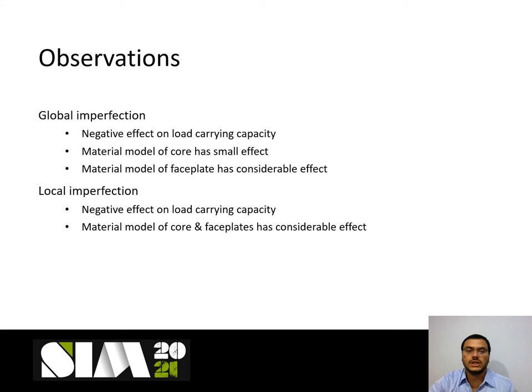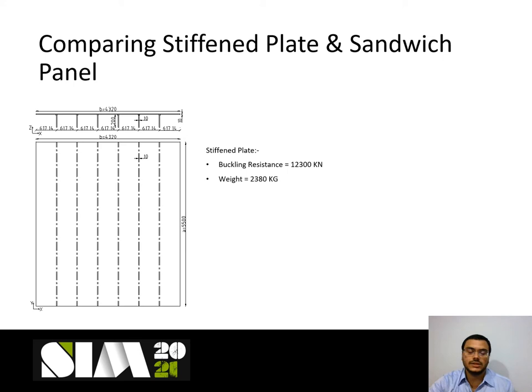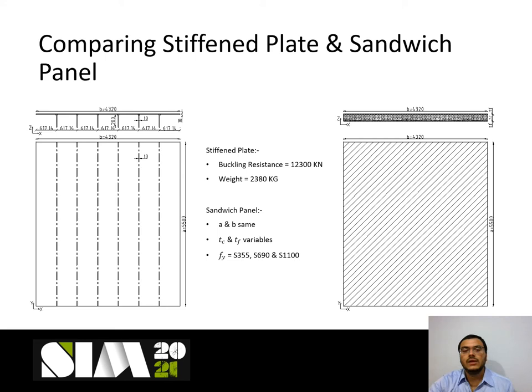For the comparison between stiffened plate and sandwich panel, a stiffened plate from a Housman structure is considered — specifically the stiffened plate with the highest dimensions. We will try to replace this stiffened plate with a sandwich panel of the same length and width so as to achieve the same buckling capacity but with less self-weight, by varying the thickness of the core and the thickness of the face.